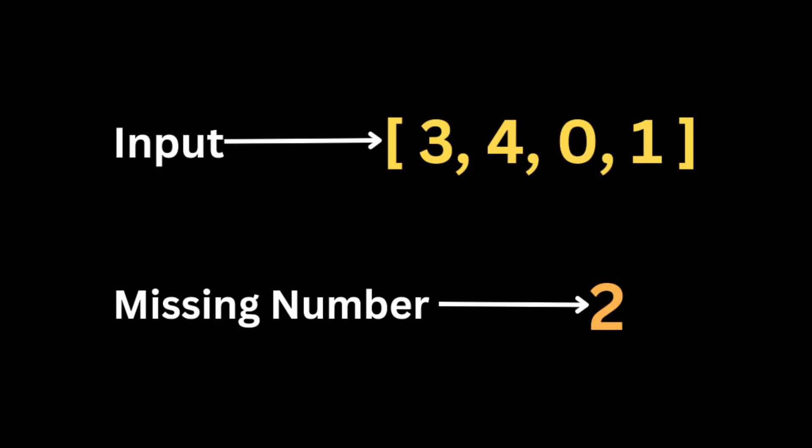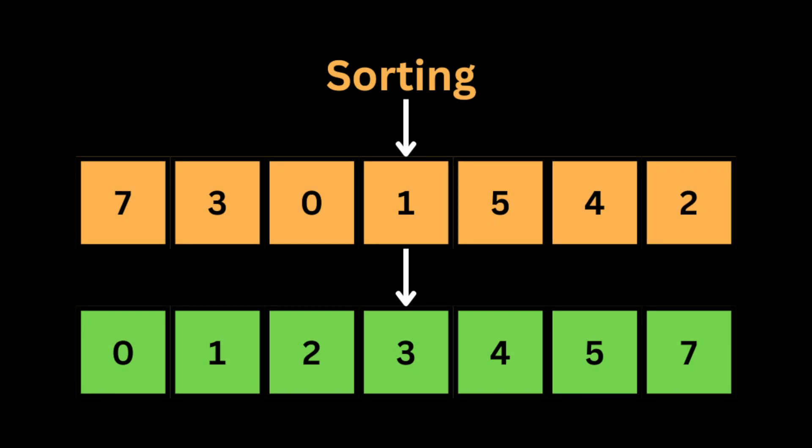Let's get started. The problem gives us an array that contains n distinct numbers taken from 0 to n, and asks us to find the number that is missing from the array. For example, if we have this input array, the output will be 2 because the missing number from 0 to n — which in this example is 4 — is 2.